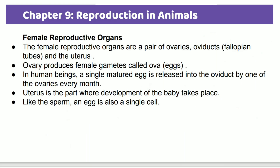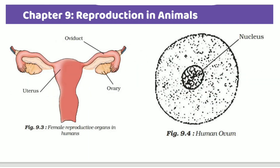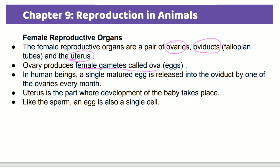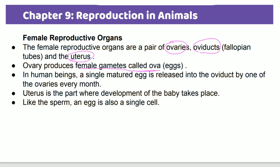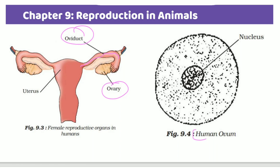The female reproductive organ consists of a pair of ovaries, an oviduct, and a uterus. The ovaries produce the female gamete called ova. In human beings, a single matured egg is released into the oviduct. The uterus is the part where the development of the baby takes place. Both the egg and sperm are single cells.